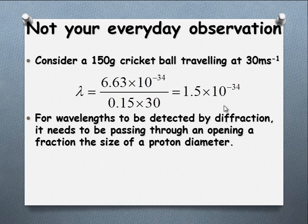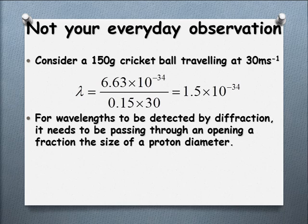That is exceptionally small — clearly, by the negative 34. Now, if we want to detect such a wavelength, we need to pass a cricket ball through a slit or an aperture that is less than the diameter of a proton. So clearly we're not going to observe that. Even if we were to slow this velocity down to 1 meter per second or half a meter per second, we're talking 10 to the negative 33 or 10 to the negative 32 — very little effect on being able to observe such a wavelength.